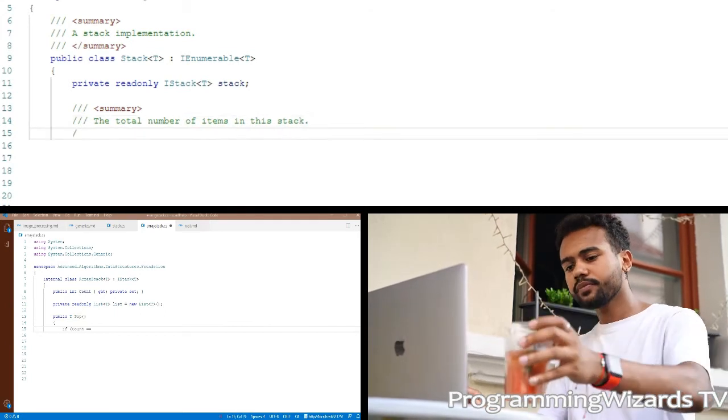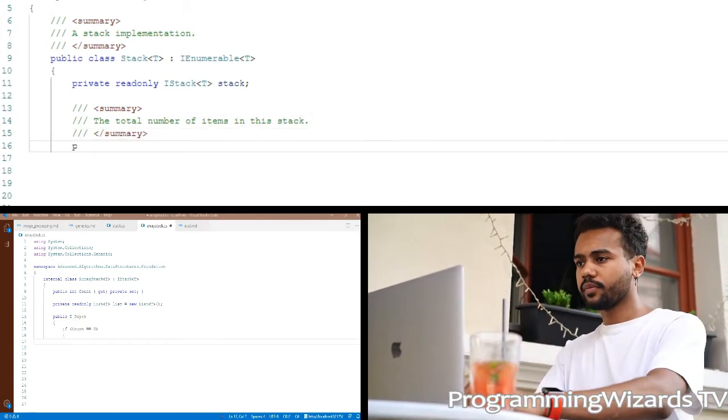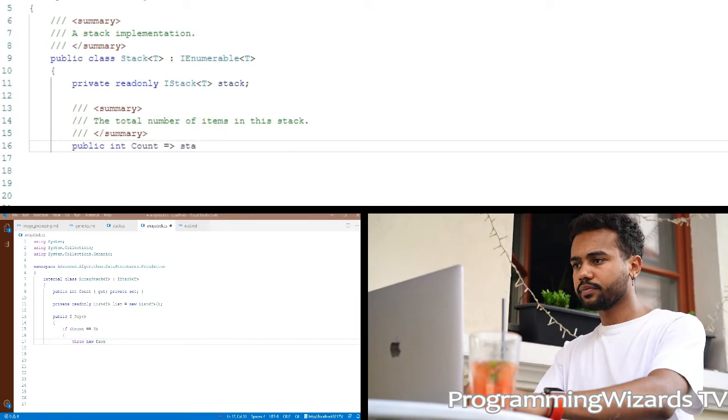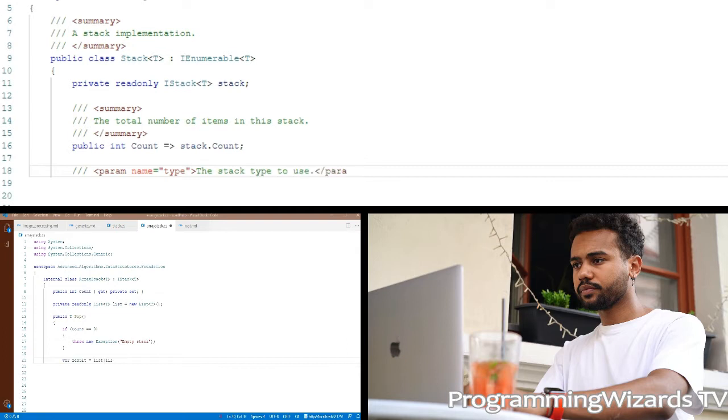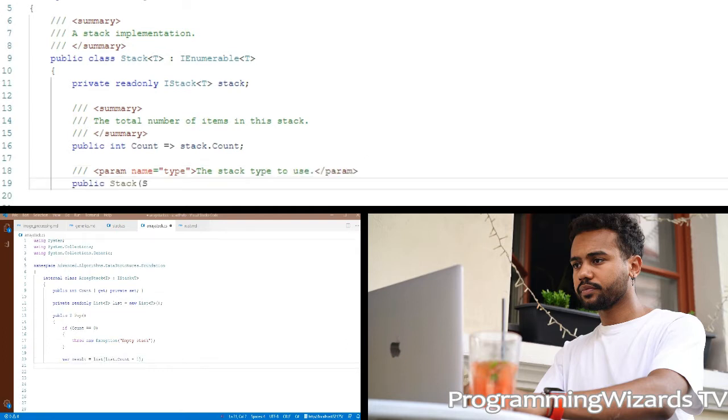Generics express reusability through a template that contains placeholder types. Generics have the advantage of increasing type safety and reducing casting and boxing. Delve into .NET-based class libraries, and you will find countless usage of generic classes, interfaces, structures, delegates, and methods.